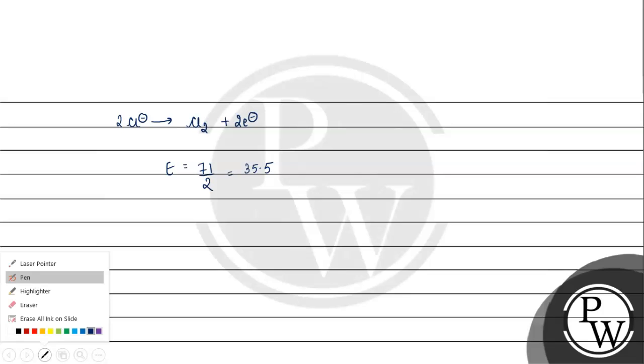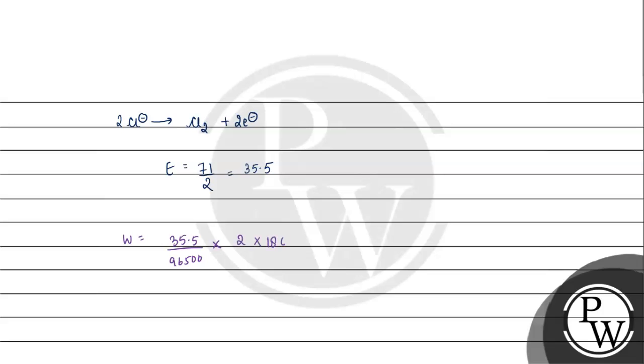Now if we calculate, W will be 35.5 by 96500, times 2 ampere current, times 1800 seconds. If we solve this, W equals 1.32 gram.